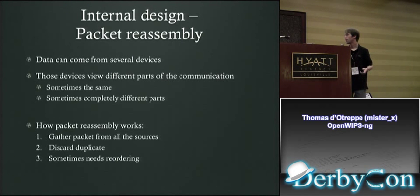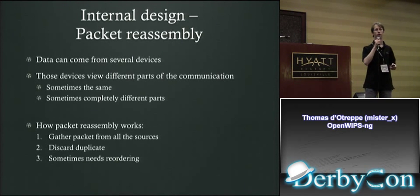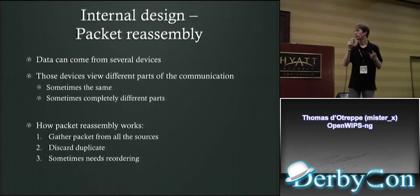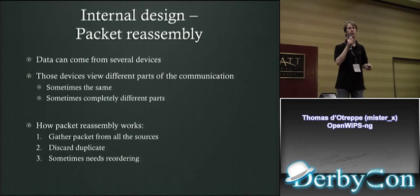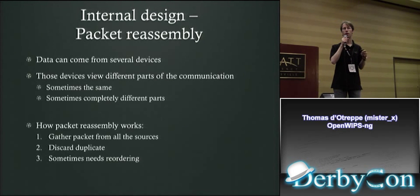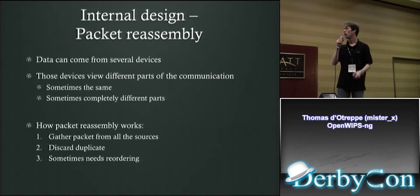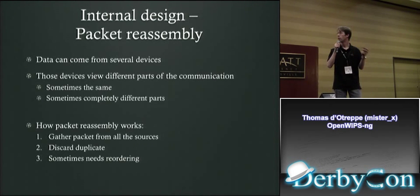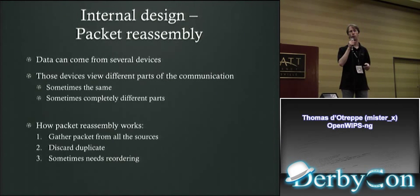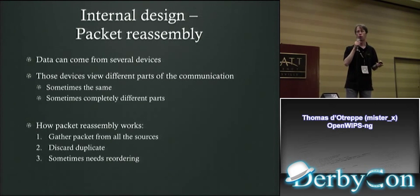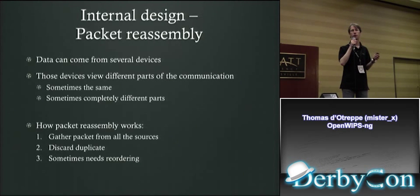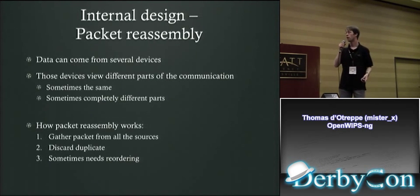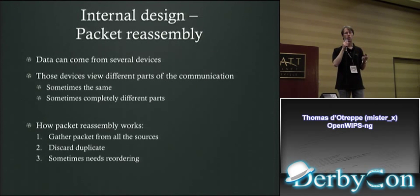For packet reassembly, data can come from several different sensors that see different parts of the communication — sometimes completely different, sometimes overlapping. We gather all the packets from different sources, put them into a list, discard all the duplicates (which is usually straightforward), and then sometimes do some reordering because of differences in packet arrival times.